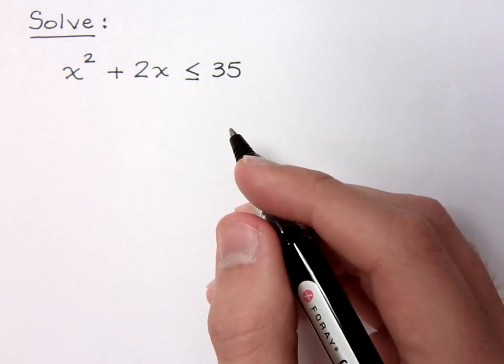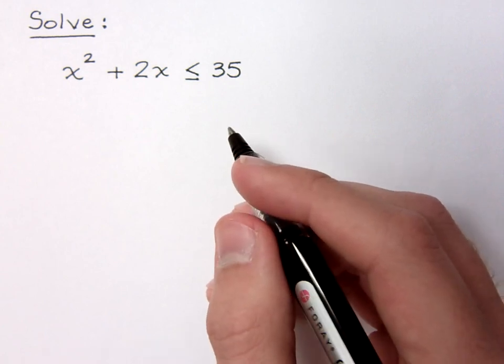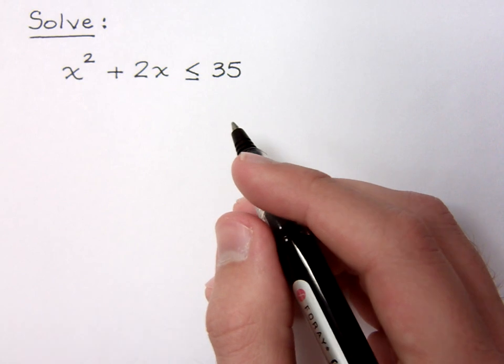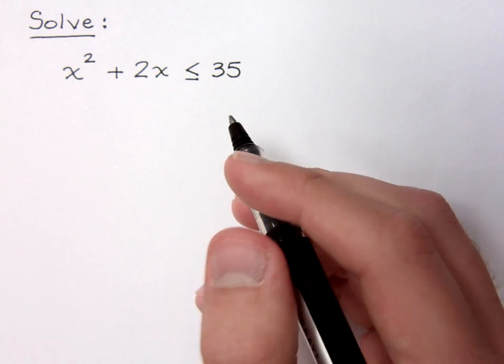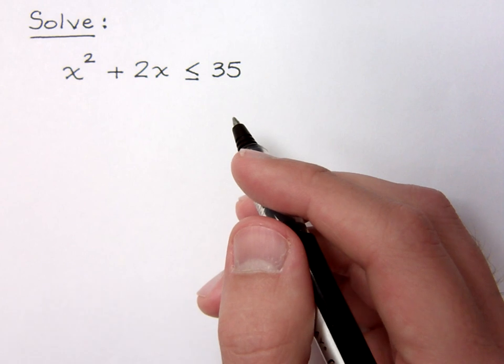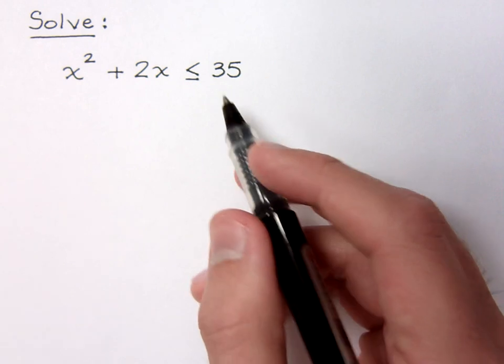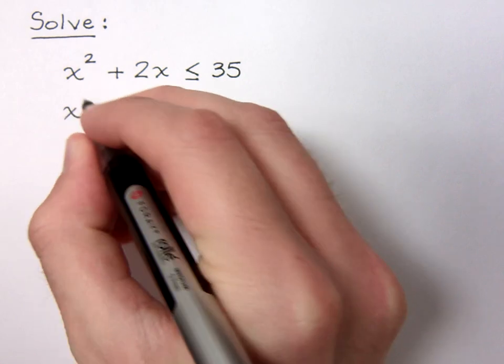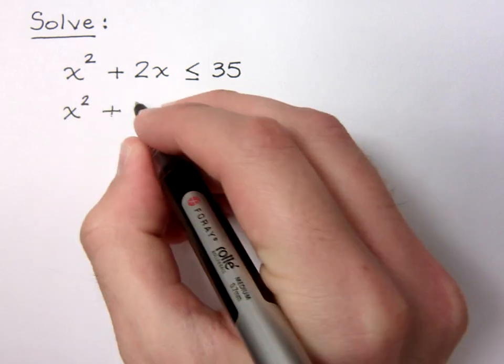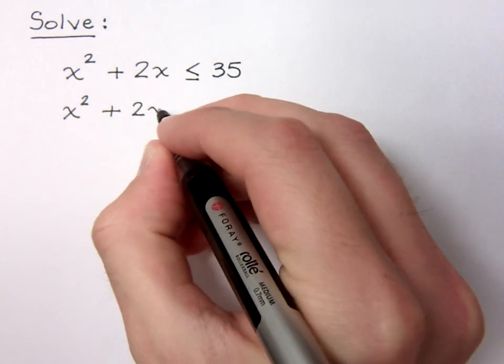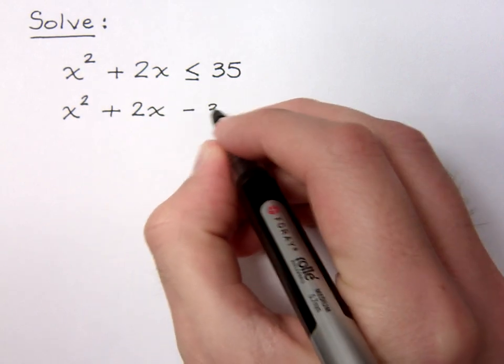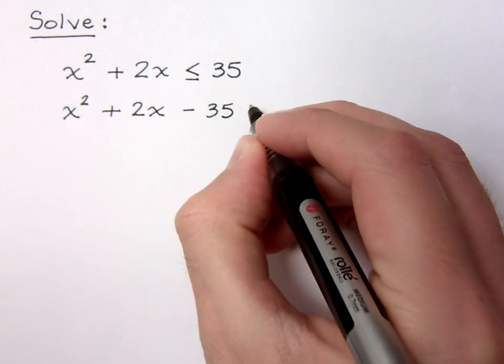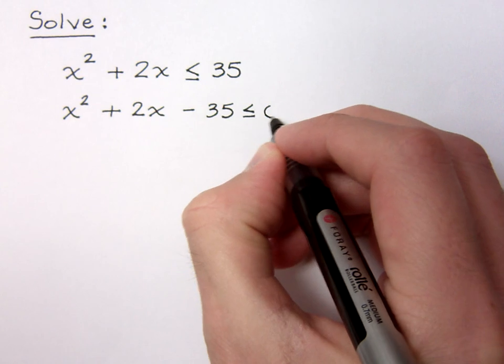It's just like taking a quadratic equation and finding factors. And in fact, you need to treat this as though it is a quadratic equation. Now, if this were a quadratic equation and not an inequality, you would move the 35 to the other side of the inequality. And that's just using the addition property, so no big deal here. x squared plus 2x minus 35 is less than or equal to 0.